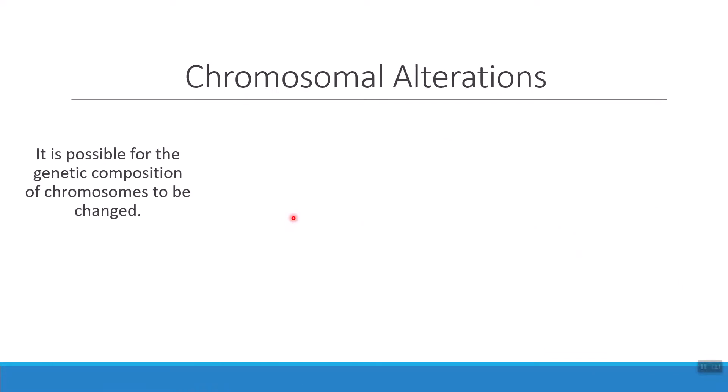In addition to having the wrong number of chromosomes being passed along to offspring, it is also possible for genetic information to be changed from one generation to the next. There are several different ways that we can change information. Here's a big picture idea: the larger the change, the more different we are than normal, the more severe those effects are going to be. Let's look at some examples of the different types of ways we can change the genome and consider which of these might be more or less dangerous or more or less severe.